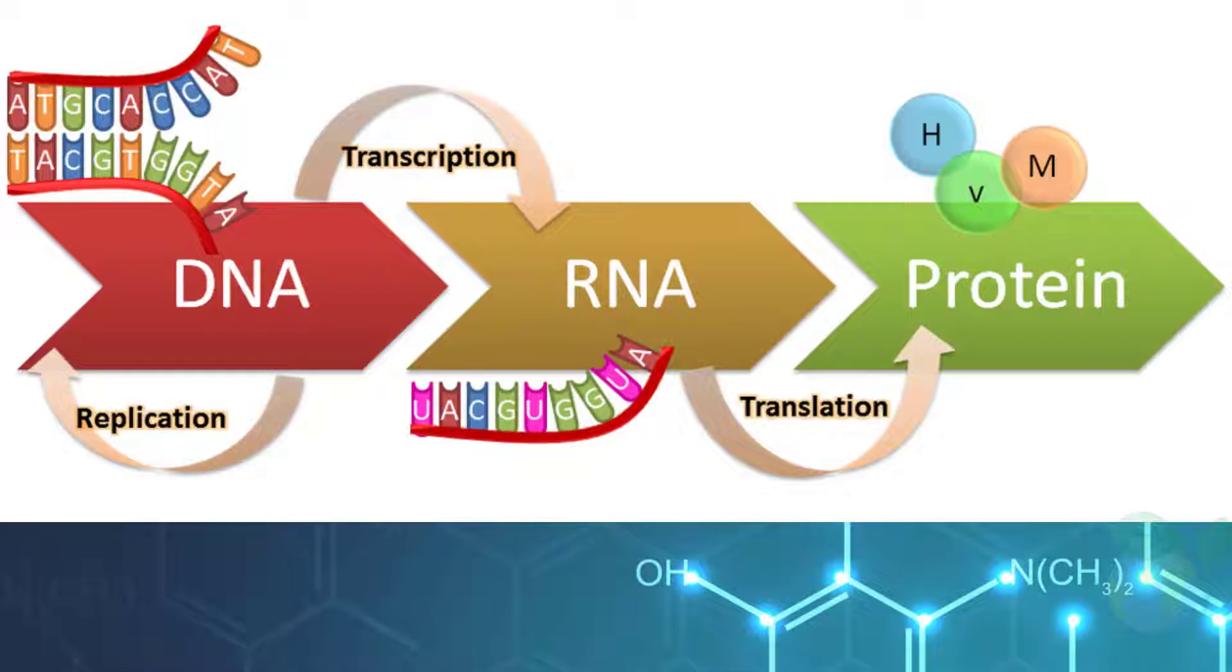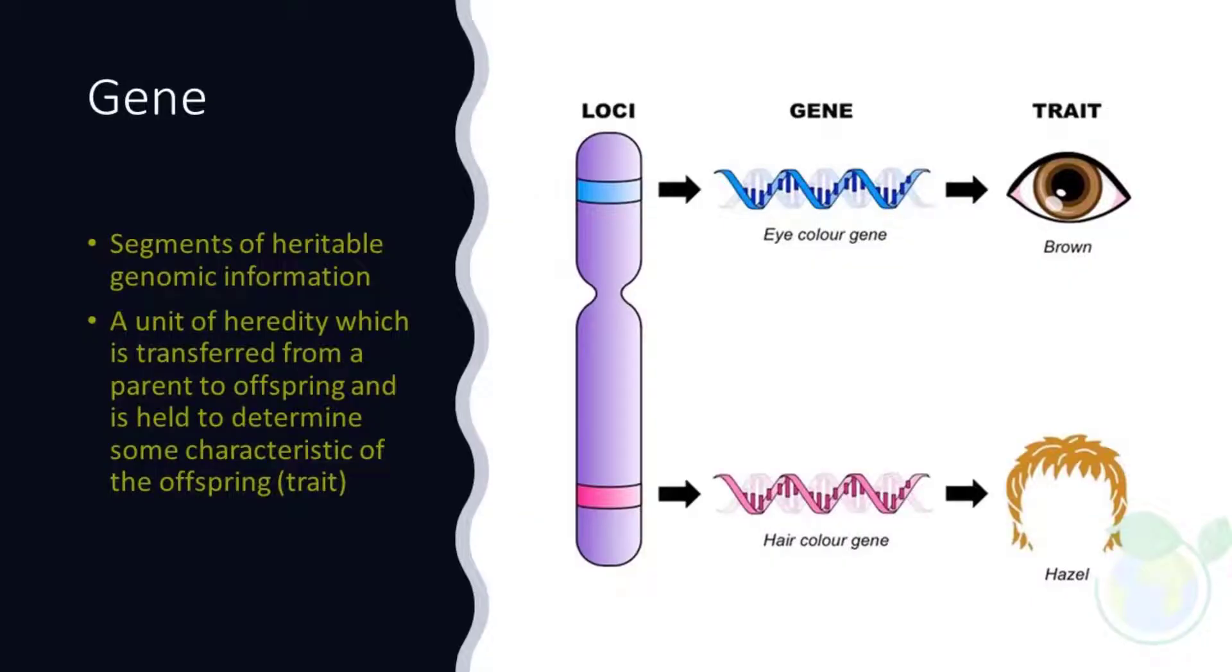Let us start with the first step. Genes are segments of information stored on gigantic nucleic acid molecules. They are referred to as a unit of heredity which is transferred from parent to offspring and is held to determine some phenotypic characteristic of the offspring, also termed as trait. On the other hand, genes get expressed in functional gene products termed as proteins or molecules in their own right. These make both of these substances, and the relationship between them, extraordinarily important to study.